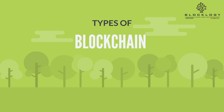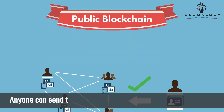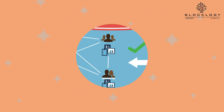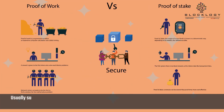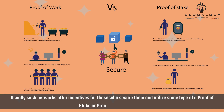Types of blockchain. Public blockchain: anyone can send transactions to it as well as becoming a validator. Usually such networks offer incentives for those who secure them and utilize some type of a proof of stake or proof of work algorithm.